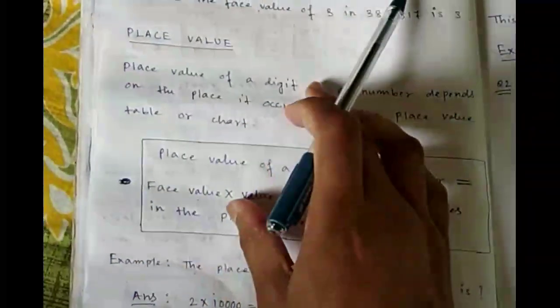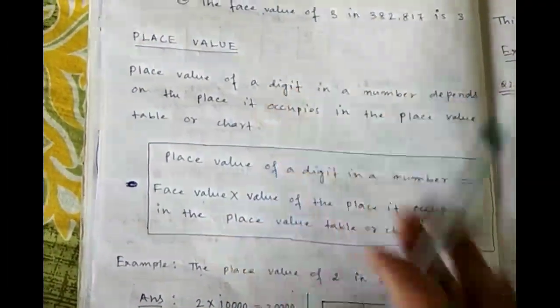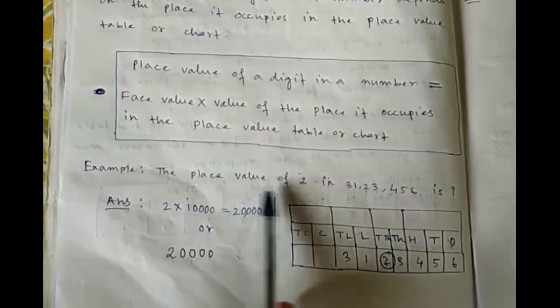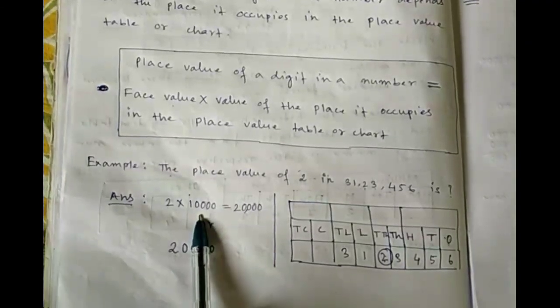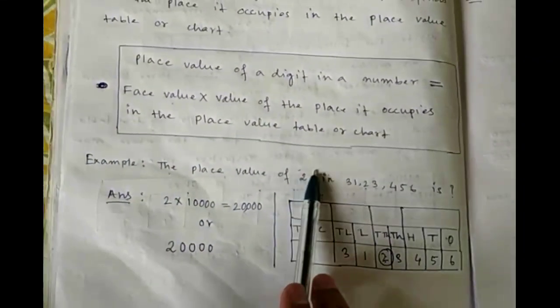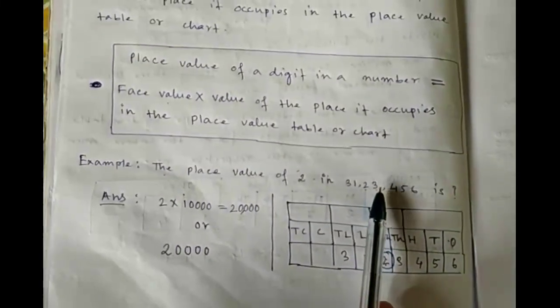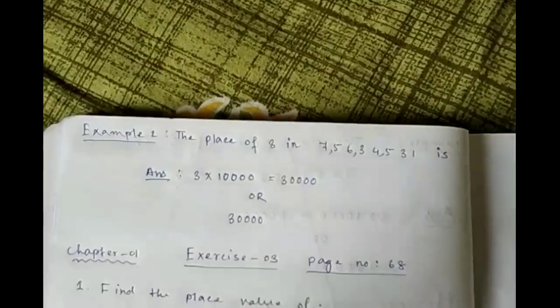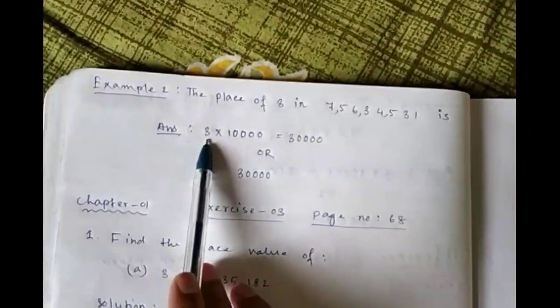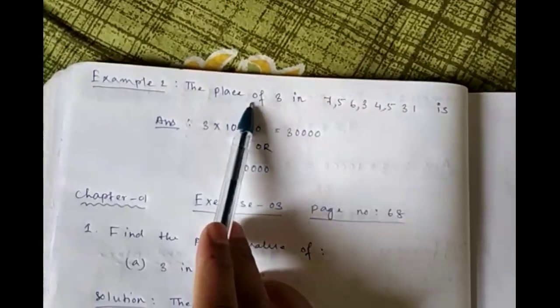Now the concept of place value. For example, the place value of 2 in this number: first we write 2, because we are finding the place value of 2, and then we multiply 2 by its place value. The place value of 2 is ten thousand, so we multiply 2 by 10,000. Or simply, write 2 and then put four zeros after it, since there are four digits after 2.